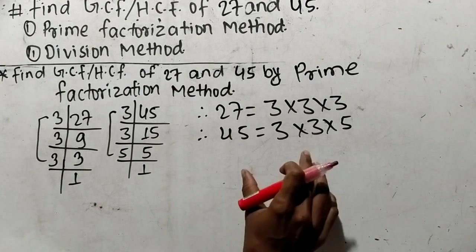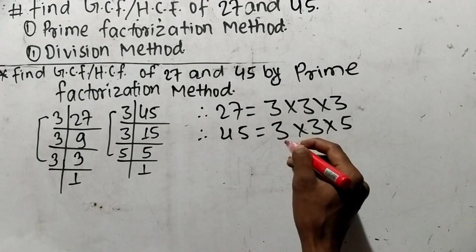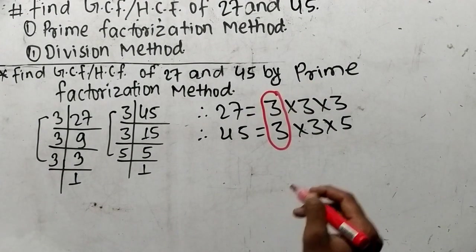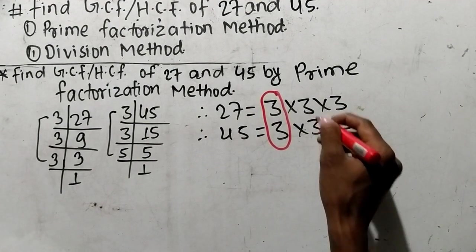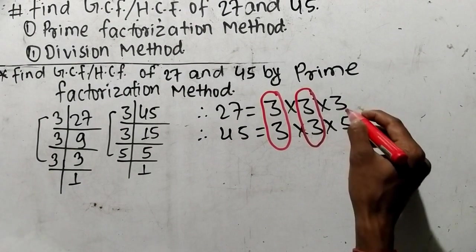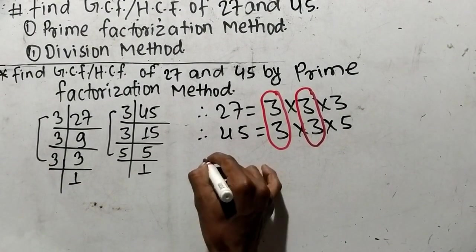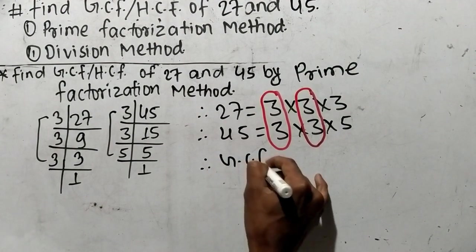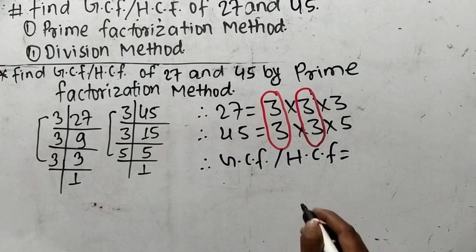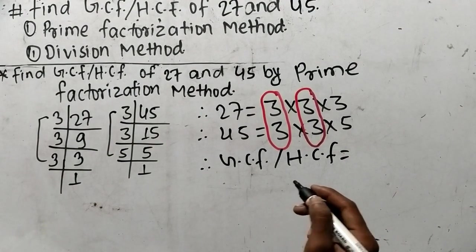Now we find out the common factors in these prime factors. Here is 3 and here is also 3, so 3 is a first common factor. Similarly here is also 3 and here is also 3, so again 3 is a common factor. At last we have 3 and 5 which are non-common factors. As you know, we are finding out GCF or HCF.